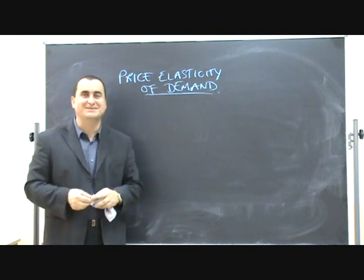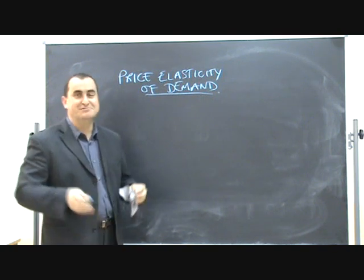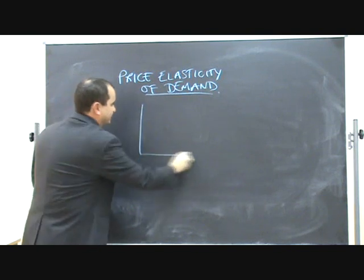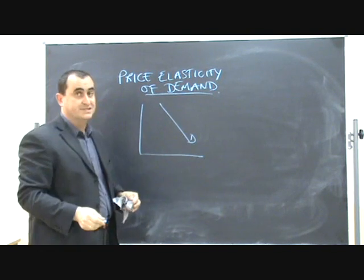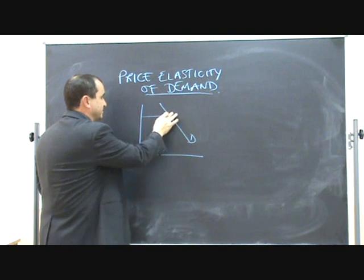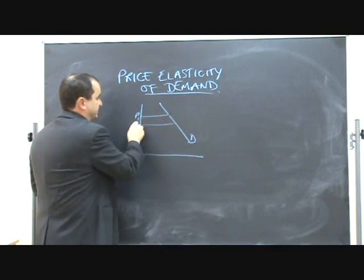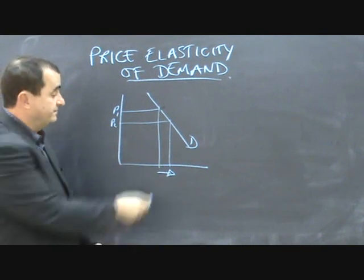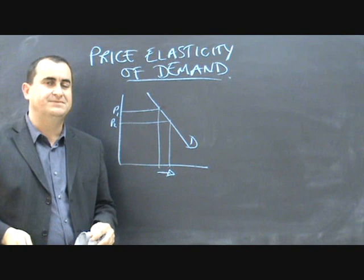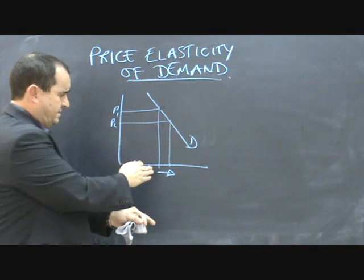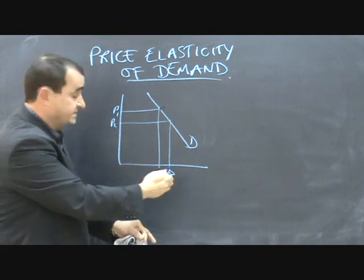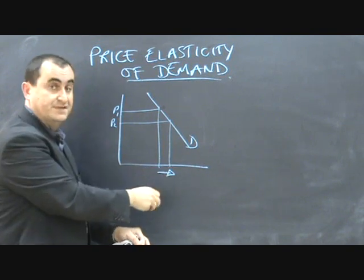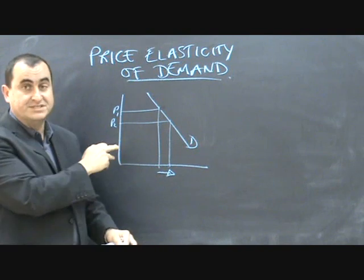Hello. Price elasticity of demand is obviously a really important concept in microeconomics. Of course we know that demand curves slope downwards, so we know that when price changes — say price falls from P1 to P2 — there will be an increase in the quantity demanded from Q1 to Q2. But elasticity of demand isn't about whether quantity demanded rises when price falls; it's about how much it rises, how responsive is the change in quantity demanded when there is a price change.